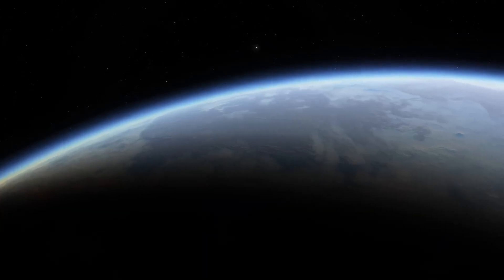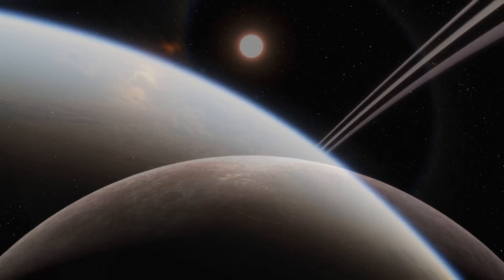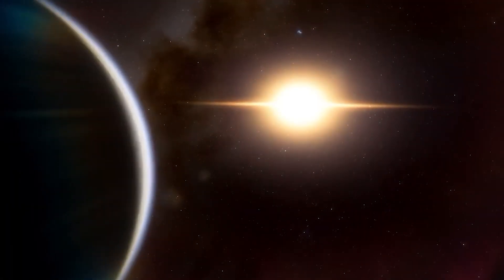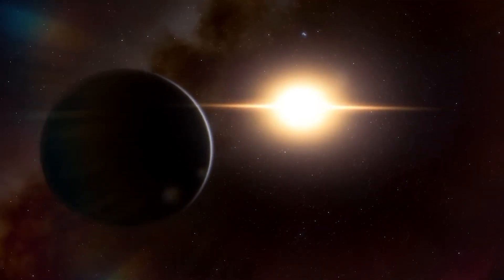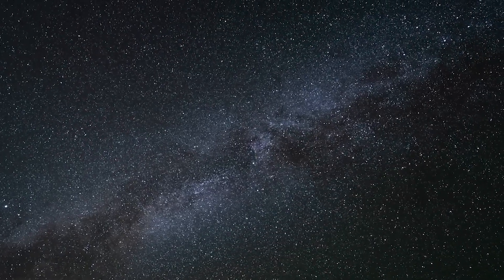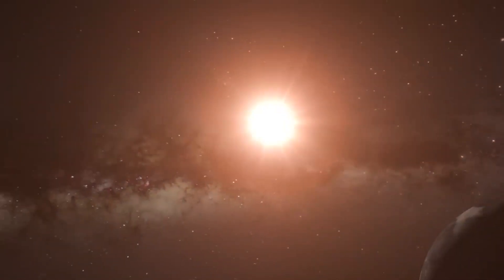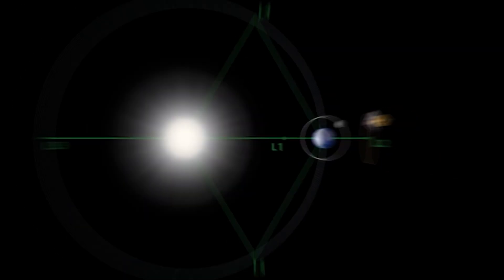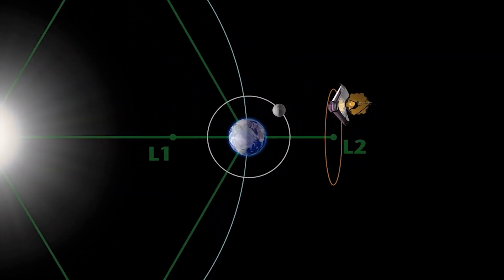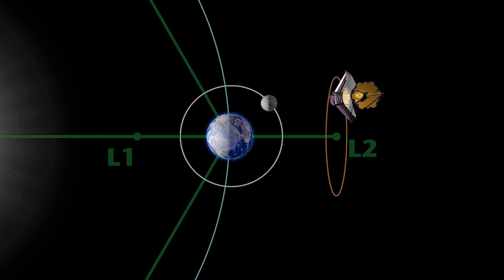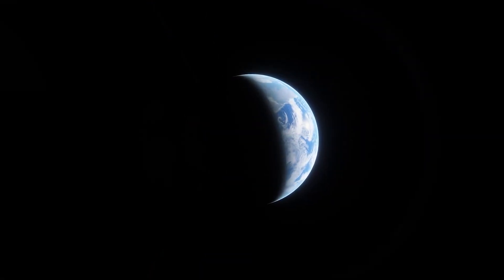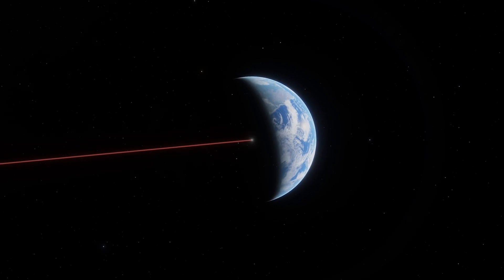The temperature variation on Proxima b, as determined by its atmospheric composition, is an intriguing topic for astronomers, and the JWST can effectively probe the planet's thermal emissions to provide crucial data on its atmospheric properties. In addition, JWST's orbit around the Earth aligns with the orbit of Proxima b, allowing full observations of its diurnal and nocturnal cycles in 11.2 Earth days.